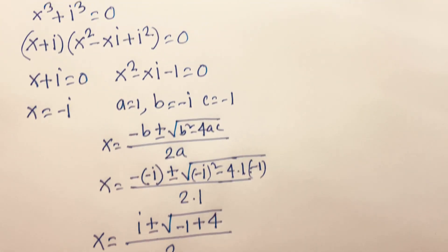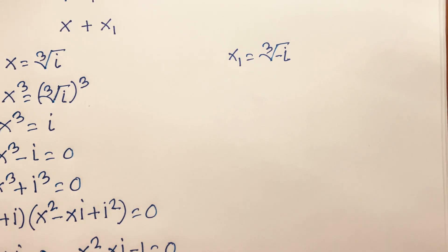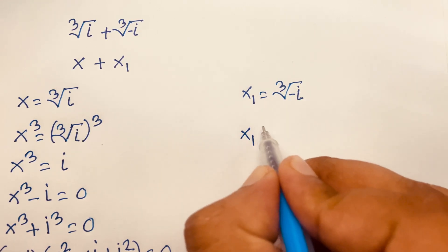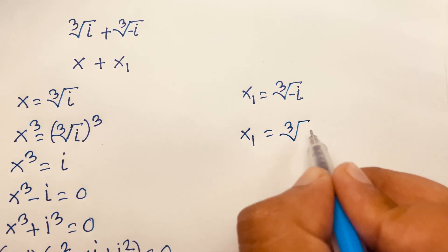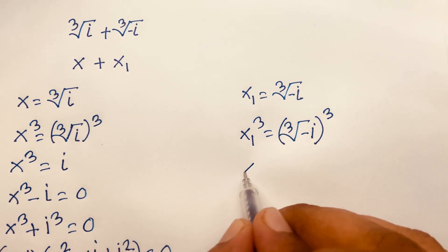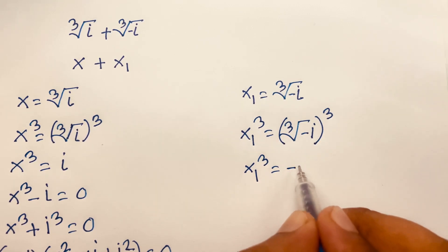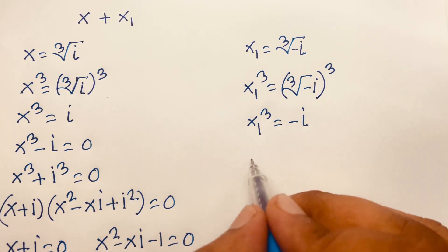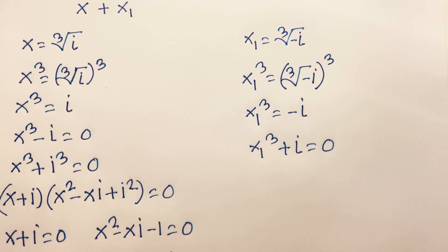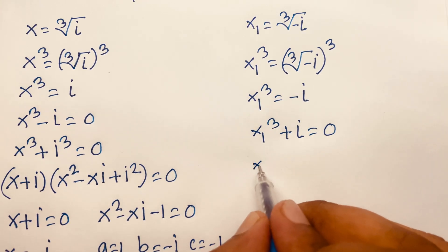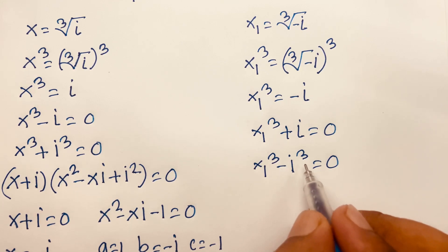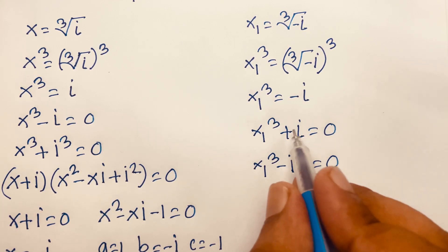Now we find the value of x1. Setting x1 equal to the cube root of minus i and cubing both sides, x1 cubed equals minus i. This gives x1 cubed plus i equals zero, which becomes x1 cubed minus i cubed equals zero, because i cubed equals minus i, so minus i cubed becomes plus i.